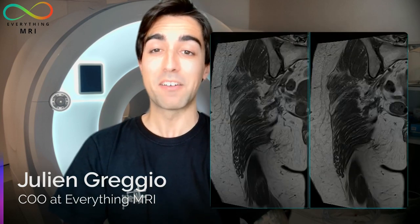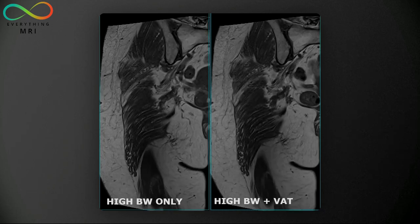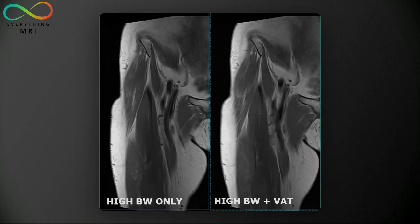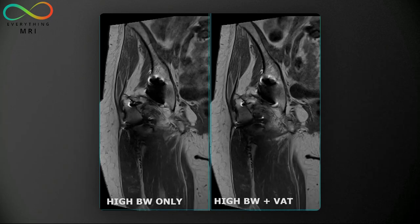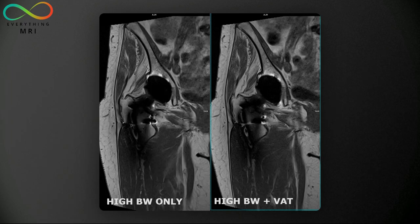Let's try to understand the real impact of VAT as regards metal artifact reduction. On the left side of the screen we have our coronal T1 acquired simply by increasing the receive bandwidth but without applying any further metal reduction technique. On the right side we have combined a high bandwidth with VAT specifically at around 80%. Spotting the differences straight away is a little more challenging at this stage. If we look closer, we can notice that the signal pile-up is slightly reduced when VAT has been used in conjunction with high bandwidth, but overall the impact of adding VAT is kind of negligible if you have already increased the received bandwidth significantly.